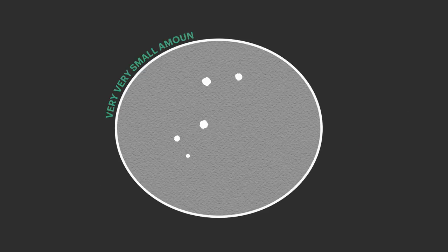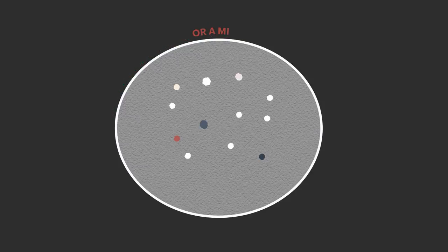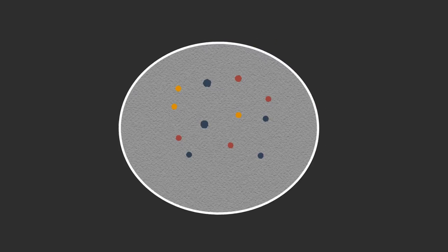But when you're dealing with very, very small amounts of DNA, like just a few skin cells left behind, or a mixture of a bunch of people's DNA, then the analysis is more complicated.